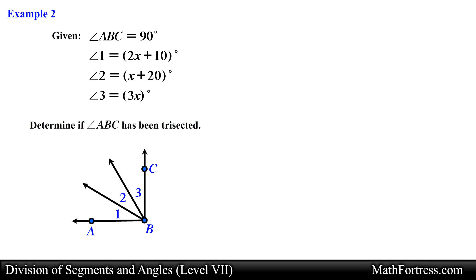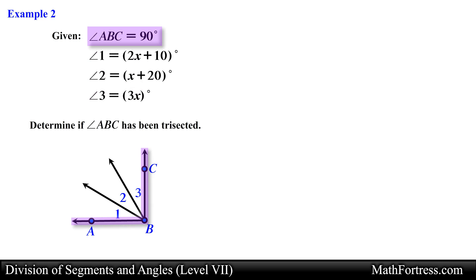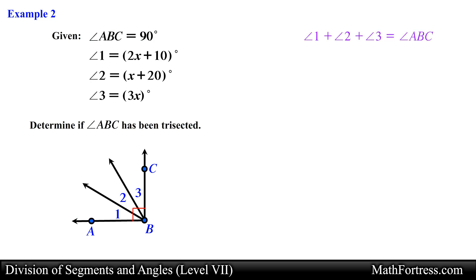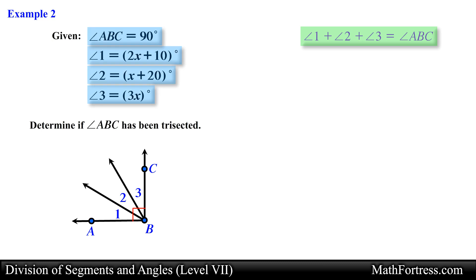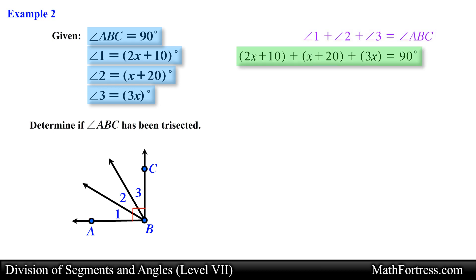Before we do that we need to figure out the value of x so we can determine the measurement of each angle. Notice that angle ABC is a right angle since it measures 90 degrees, so we label it with a small square mark. We also know from the diagram that angle ABC is formed by angle 1, angle 2, and angle 3. This allows us to set up the geometric relation: the measurement of angle 1 plus angle 2 plus angle 3 equals the measurement of angle ABC. Substituting the algebraic and numerical expressions for each angle gives us our equation.